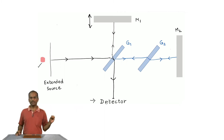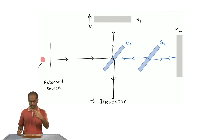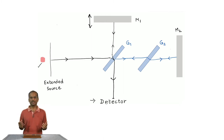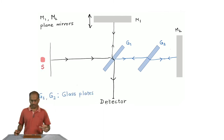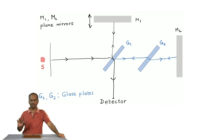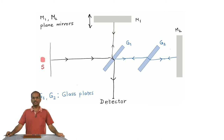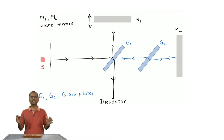Starting from one beam of light we now have two beams: one which comes from M1, passing through G1 and hitting the detector; the other which comes from M2, passes through G2, gets reflected by G1, and finally hits the detector. M1 and M2 are plane mirrors that are fully reflecting. M1 is movable whereas M2 is fixed, so the way to create a path difference is by making M1 movable. G2 is the compensatory glass plate, kept mainly to equalize the path difference in the two arms.